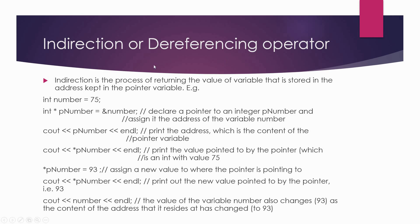The next important concept is the dereferencing operator, also called the indirection operator ('*'). Indirection is the process of returning the value of the variable stored at the address held in the pointer. For example, given 'int number = 75' and 'int* p_number = &number', using 'cout << *p_number' dereferences the pointer and prints the value pointed to by the pointer, which is 75.